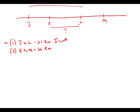Now forget statement number one. Statement number two tells us that the distance from K to M is 26 kilometers. Again, it's only giving us one distance — not the distance that we want — and we have no other distance to add or subtract to it. So by itself, this statement is insufficient.